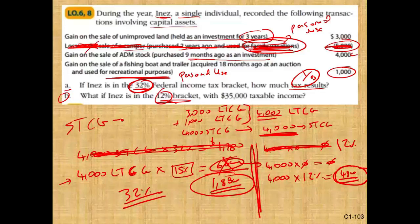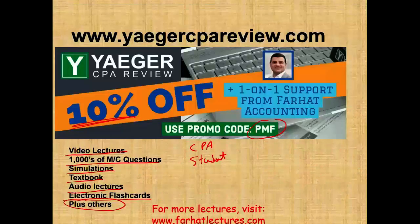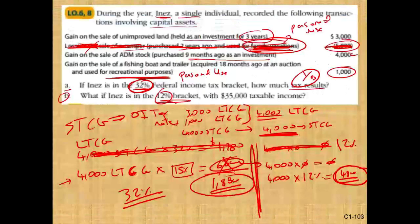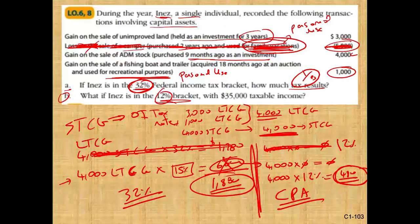Short-term capital gain gets your ordinary income tax rate — that's easy. Long-term capital gain depends on your tax bracket: 10 to 12% bracket pays 0%; 22 to 35% bracket pays 15% — though there's a threshold around $525,000; and if you're in the 37% tax bracket, you pay 20%. If you have any questions or comments about this topic, whether you're studying for your CPA exam or college courses, study hard — it's worth it. Visit my website for additional lectures, and please consider donating. Thank you very much.